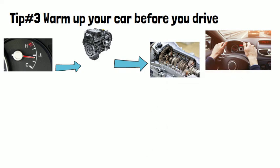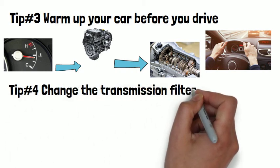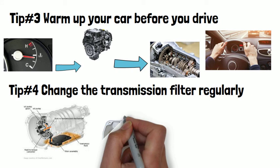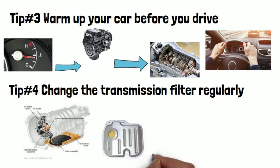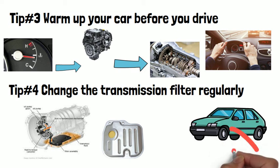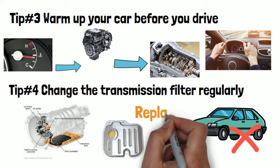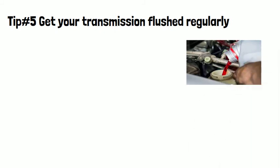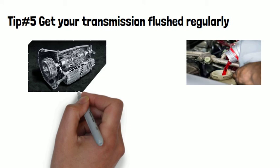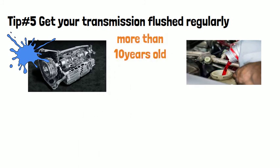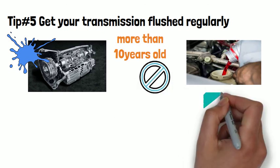Tip number four: change the transmission filter regularly. Your car's automatic transmission has a filter that needs to be changed from time to time. Some newer vehicles may not have one, but if yours does, remember to replace the filter whenever you get a transmission flush. Tip number five: get your transmission flushed regularly. Refer to your car owner's manual for the ATF change schedule and get a new transmission flush every two years. Note that some mechanics recommend against flushing if your car is more than 10 years old — consult your repair shop.